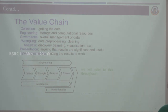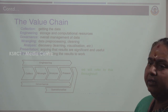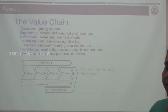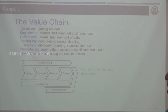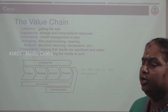The value chain of data science: this diagram shows engineering, collection, wrangling, analysis, presentation, governance, and operationalization. Collection means getting data from different domains. Engineering means storage and computational resources. Governance means overall management of the data. Wrangling means cleaning and data processing. Analysis means discovery through learning and visualization. Presentation means results in a significant and useful manner. Operationalization means putting the result to work. This is the value chain of data science.